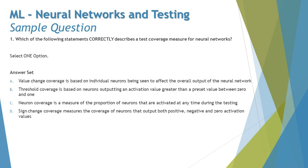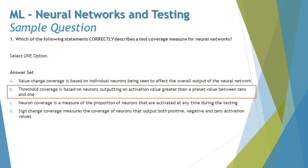So we have four different coverage measures — value change, threshold coverage, neuron coverage, and sign change coverage — but the statements for A, C, and D are not correctly justifying their respective measures. The right answer is B: threshold coverage, where we define a preset value that becomes the threshold. This measures neurons outputting an activation value greater than a preset value between zero and one, for example 0.75 and higher.